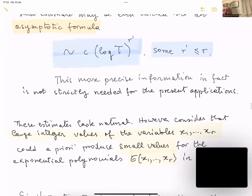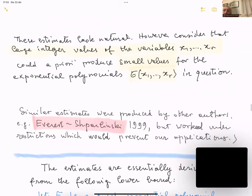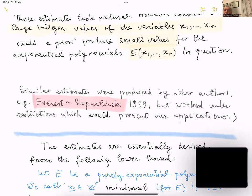This more precise information may be of independent interest but is not strictly needed for the present applications. The estimate looks natural, but a priori we could have large variables producing small values for the exponential polynomials, thus yielding many elements even when the variables are large. Similar estimates were produced in the past by Everest and Shparlinski in 1999, but they worked with restrictions on the exponential polynomials that would prevent the applications we need.